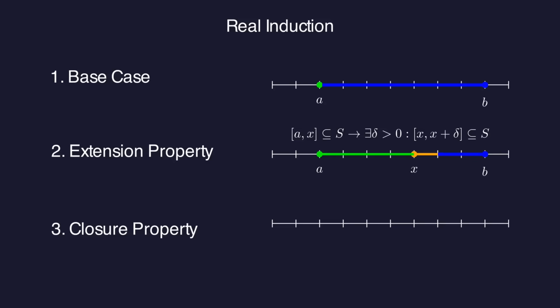But we need to add that anytime we know that the half open interval from a to x is a subset of s, then x itself is also a member of s. We'll call that the closure property. And if all three are satisfied we can conclude that s equals the entire interval.